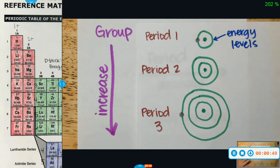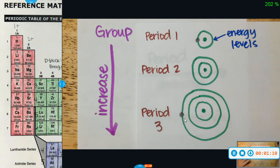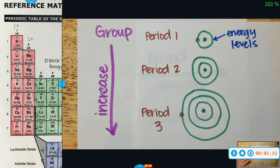The reason why reactivity increases as we go down is because of your nuclear pull. The closer your valence electron is to your nucleus, the harder it's going to be to let go of that valence electron. Compared to something lower down on your periodic table, your valence electron is very far from your nucleus, so it's actually easier to get rid of your valence electron in your outermost shell. As you go down the group, your trend is going to increase because it's easier for you to lose your valence electron.